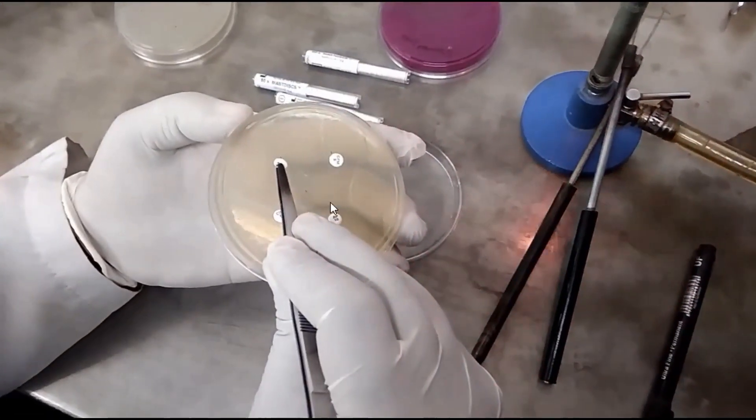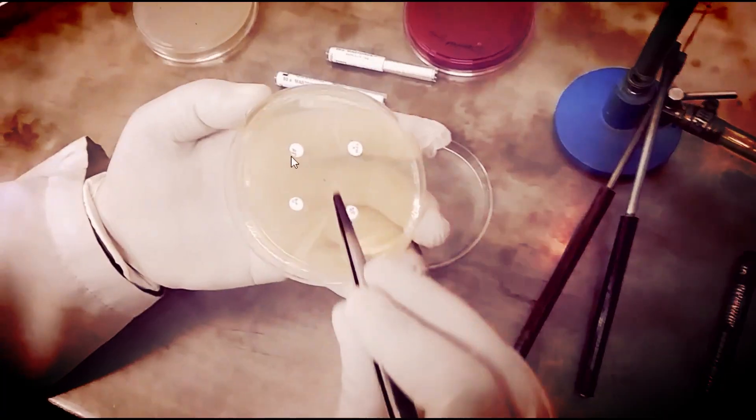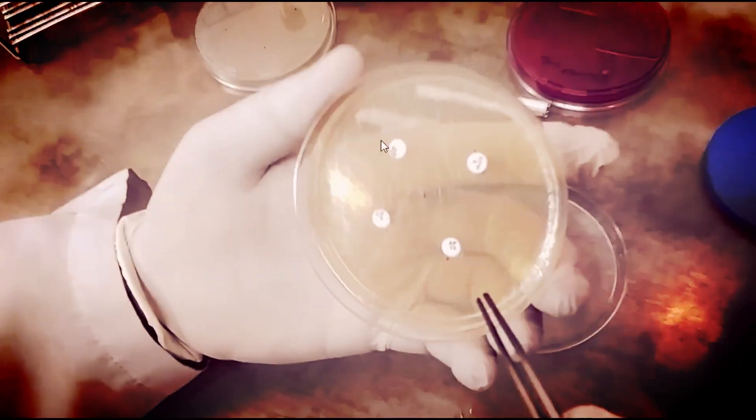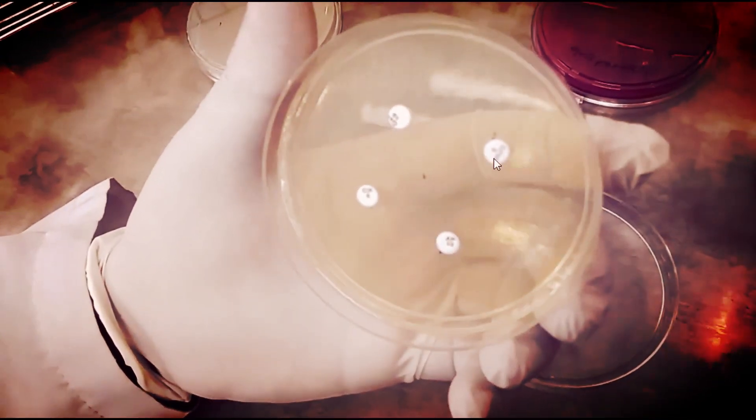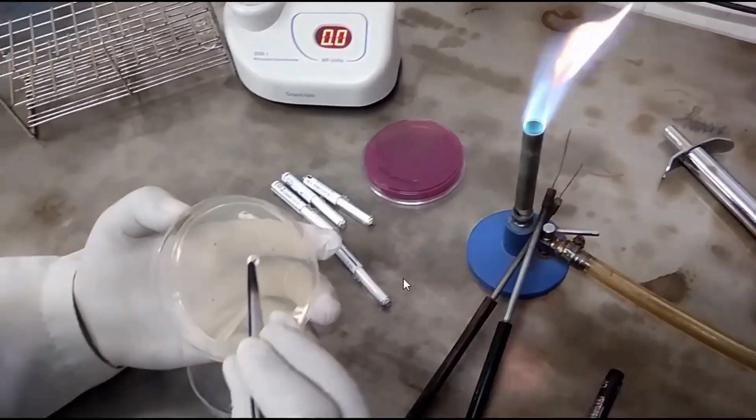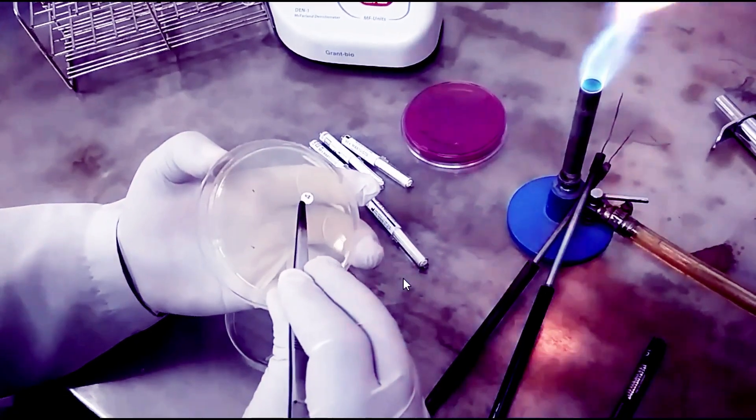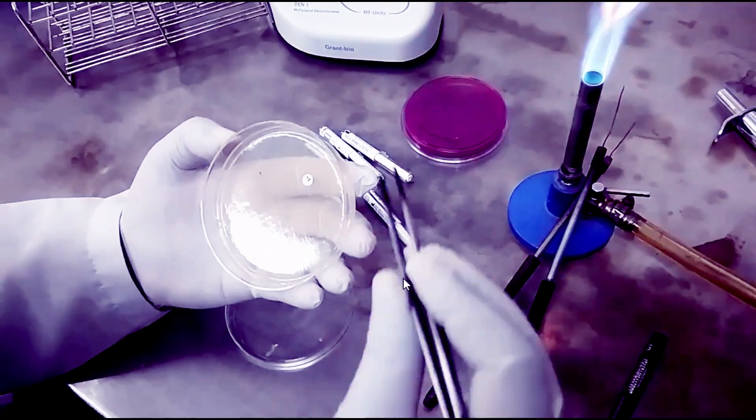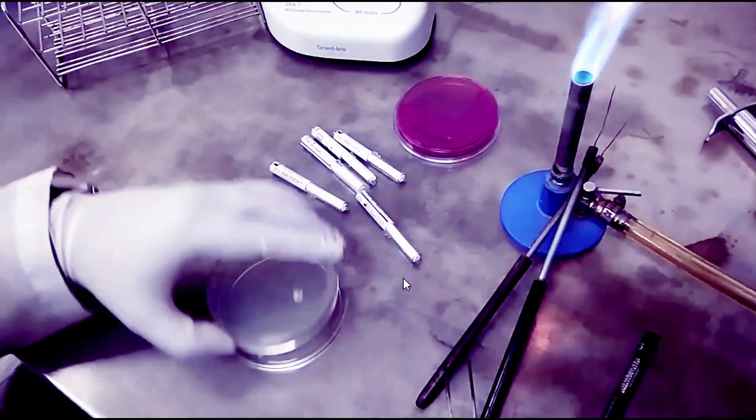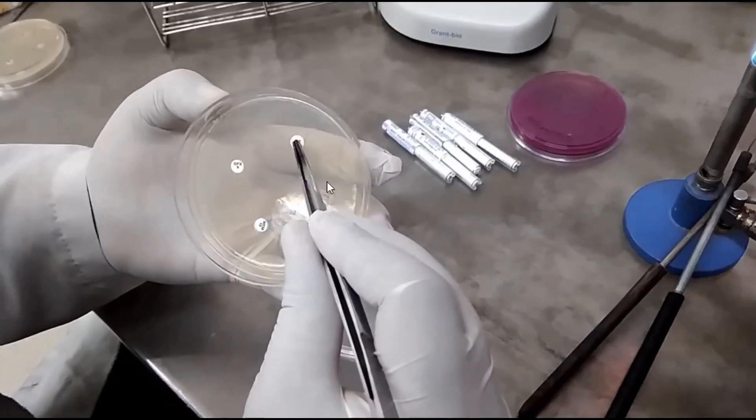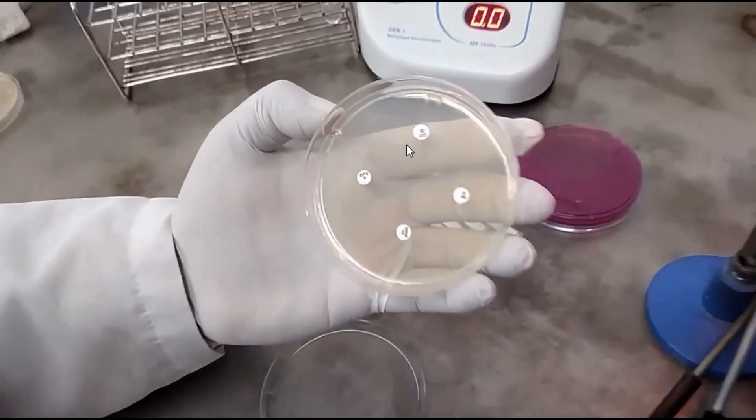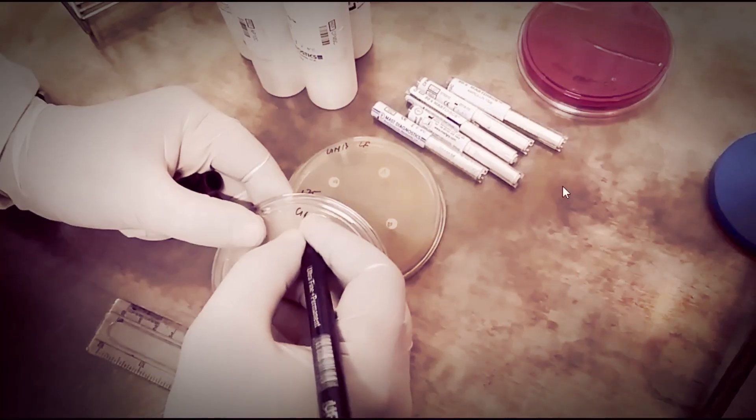Disc-to-disc distance should be 25 mm and disc-to-border 15 mm. Based on this, we can only put four discs per plate. That's why we have two petri plates to cover first-line drugs.